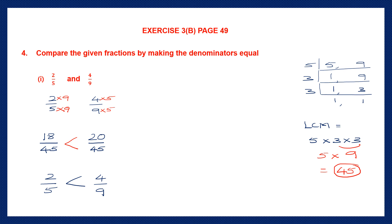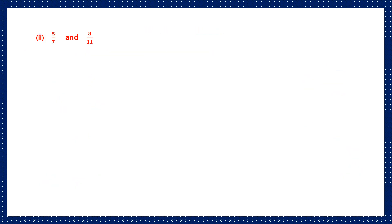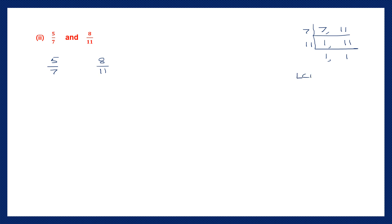Let's go to question 2: 5 by 7 and 8 by 11. We're going to make the denominators equal, so let's find the LCM of the denominators 7 and 11. Starting with 7: 7 ones are 7, we bring down 11 as it is. We continue with 11: 11 ones are 11. Our LCM is 7 into 11, and 7 elevens are 77.